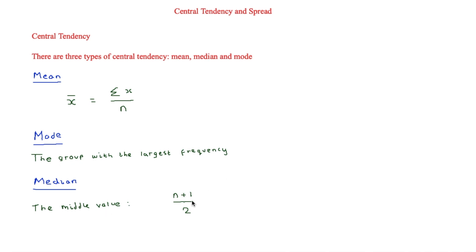To calculate the median you work out (n + 1) / 2. If this is not a whole number, you take the mean of the two values on either side. For example, if we get the 7.5th value, and the 7th value is 9 and the 8th value is 14, you take the mean: (9 + 14) / 2 = 11.5.